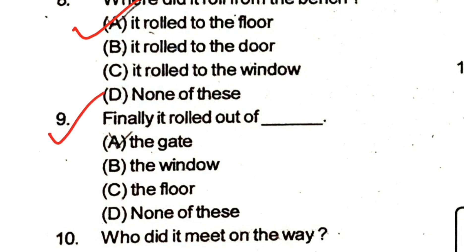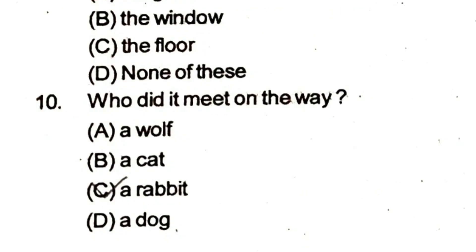Question 9: Finally it rolled out of the gate. Options: the gate, the window, the floor, none of these. Question 10: Who did it meet first on the way? Options: a wolf, a cat, a rabbit, not a dog. The answer is: a rabbit.